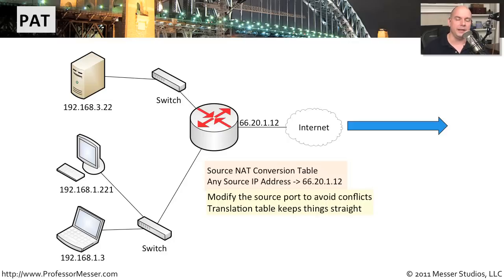Network address translation may be done to hide everyone inside a local network. This is commonly done at large organizations that present one IP address to the world, but behind the firewall there may be hundreds or even thousands of workstations. You also have this at home — if you have a home router, you can put many devices on your home network, but your ISP only sees one IP address coming from you.